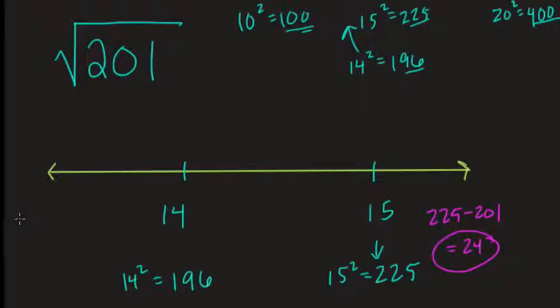But what about over here? Well, 201 minus 196 is just 5. So that means the square root of 201 is very close to 14. So I've plotted about here, let's say. There's the square root of 201. It is close to 15, but it's much closer to 14. And you can figure that out through subtraction.